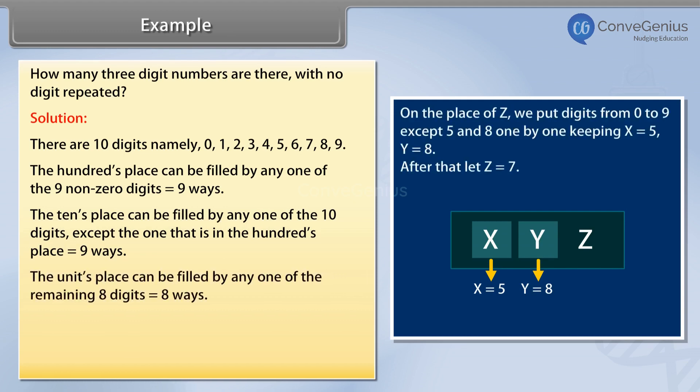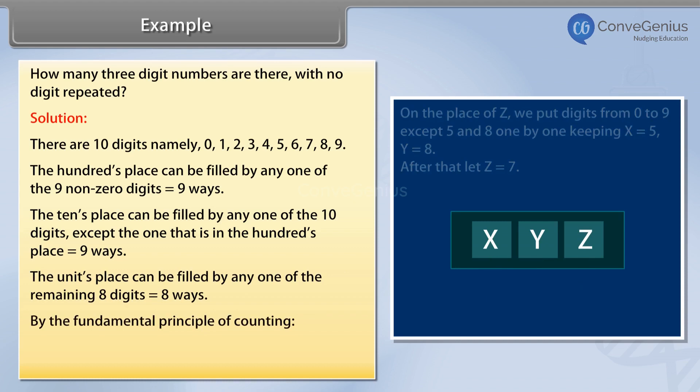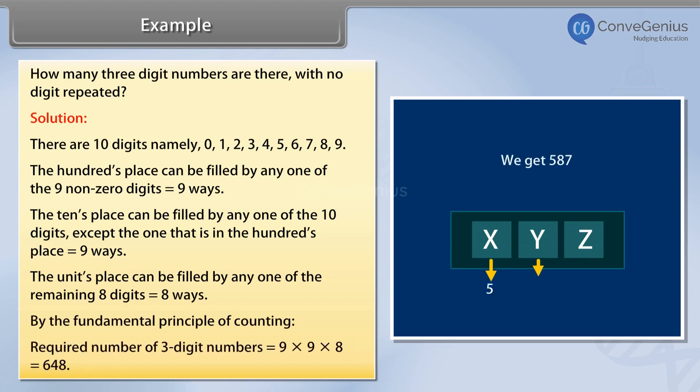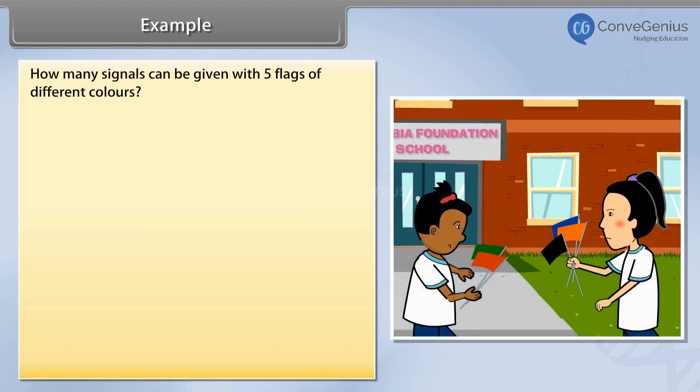The units place can be filled by any one of the remaining eight digits, equal to eight ways. By the fundamental principle of counting, required number of three-digit numbers is equal to 9 × 9 × 8 = 648.